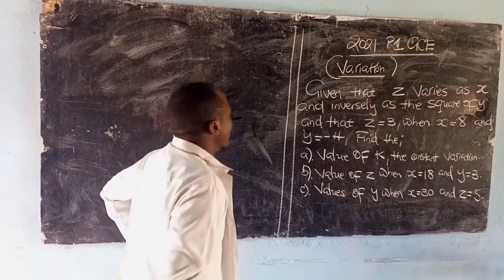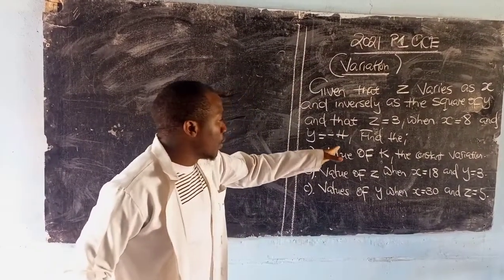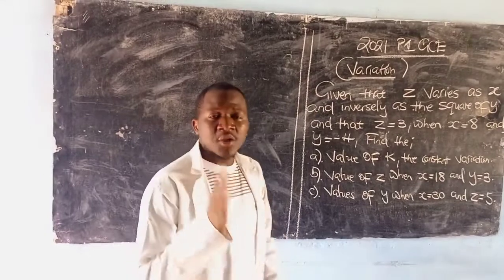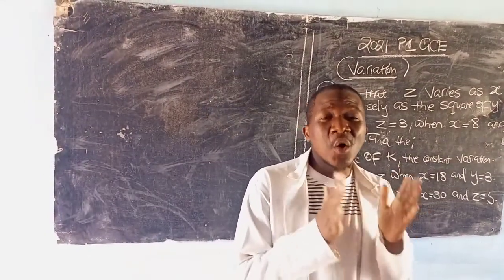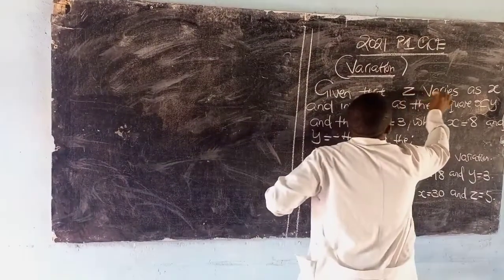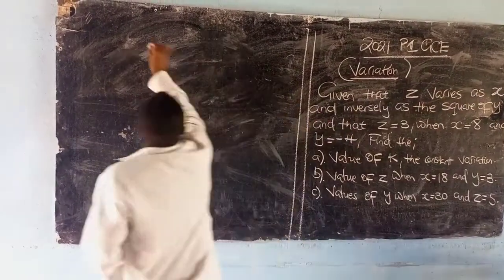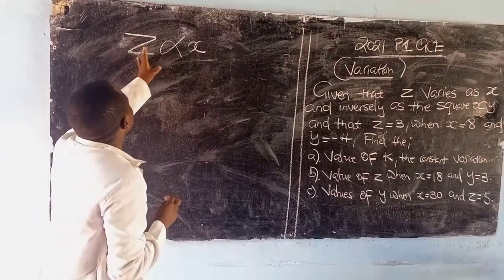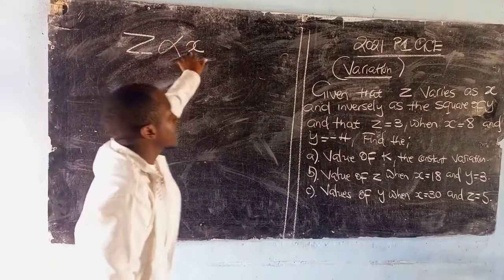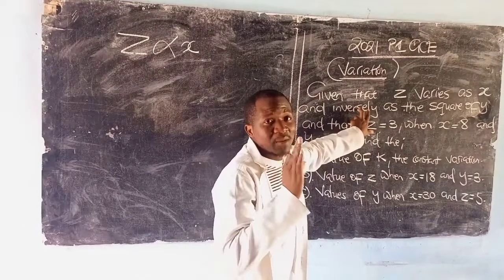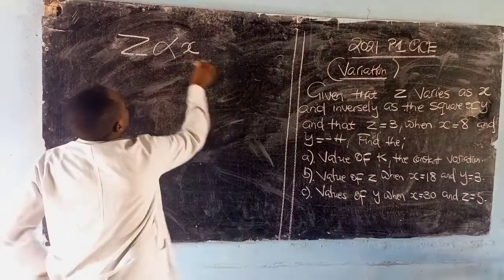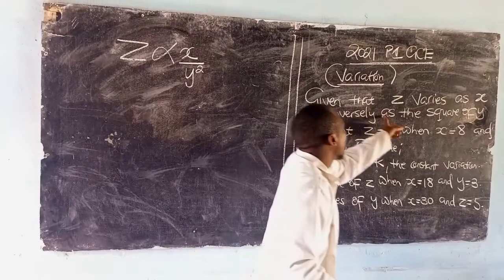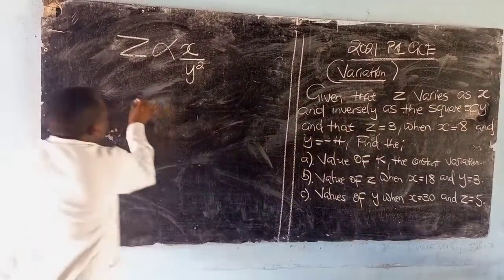Let's see how we are going to understand this. They are saying find the value of k, the constant variation. The first thing is let's try by all means to create an equational expression. So they are saying z varies as x, which we are going to say z varies directly as x and inversely, that means this will become a fraction, so this will be over y raised to the power 2, which means inversely as the square of y.